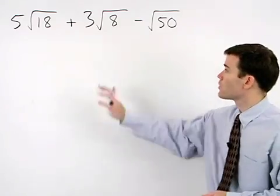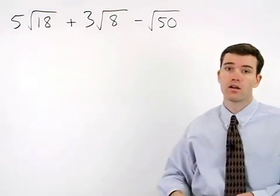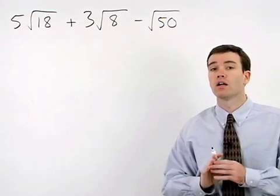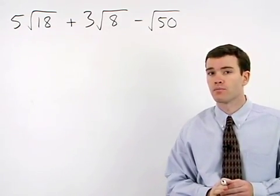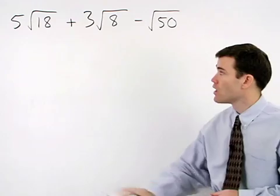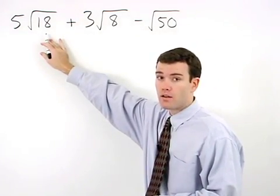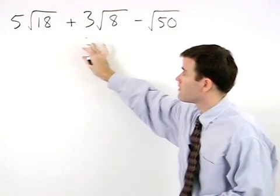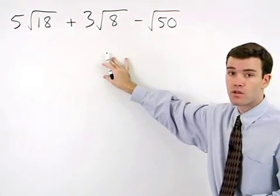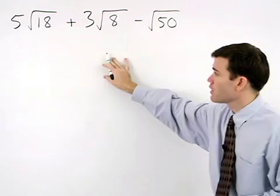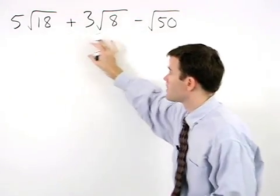In order to add these radical terms together, we must have what are called like radicands. In other words, the number inside the radical, which is called the radicand, must be the same for the different terms. Clearly, in this problem, the radicands are very different.